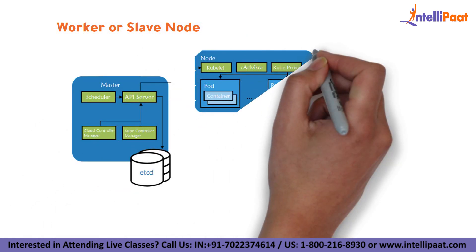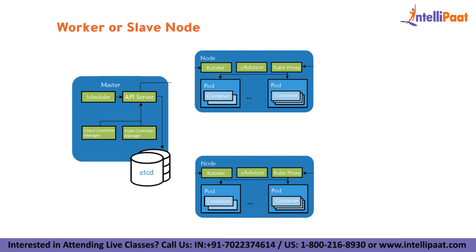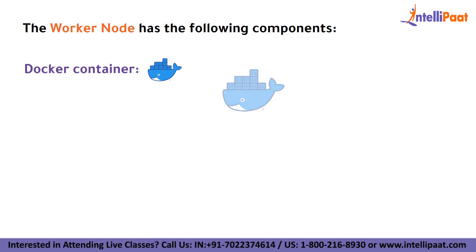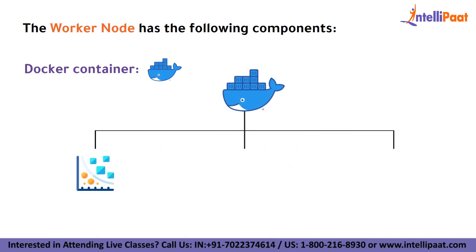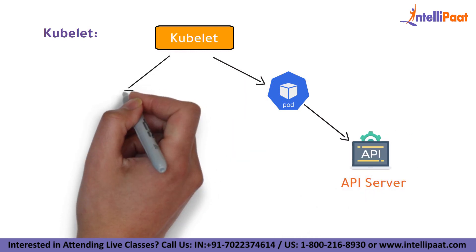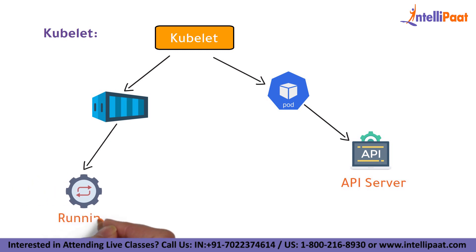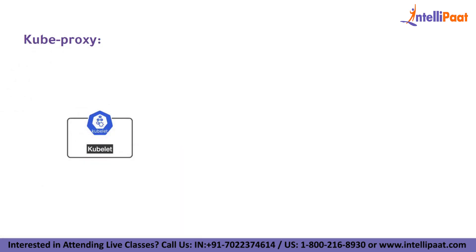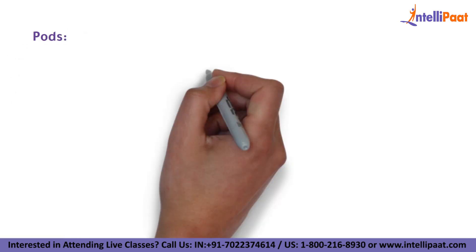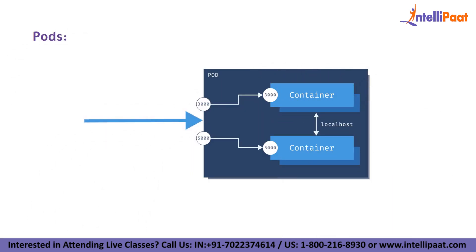Worker or slave nodes consist of all the services required to manage networking among containers. The services communicate with the master node and allocate resources to scheduled containers. The worker node has the following components: Docker container, which must be initialized and run on each worker node, running the configured pods. Kubelet gets the configuration of pods from the API server and ensures that the mentioned containers are ready and running. Kubeproxy behaves like a network proxy and has a load balancer for a service on any single worker node. A pod can be thought of as one or more containers that can logically run on nodes together.